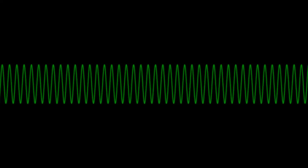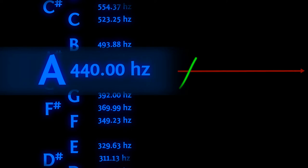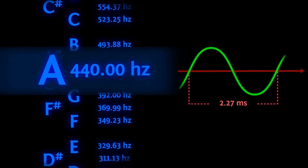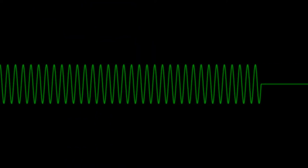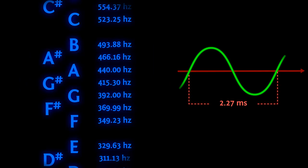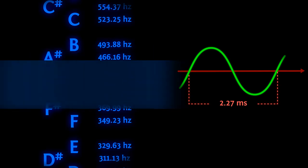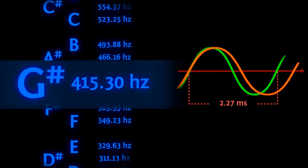Alright, here's the tone. What you heard was a 440Hz sine wave, also known as A above middle C. Here's another one. This one was a 415Hz sine wave, also known as G-sharp above middle C.